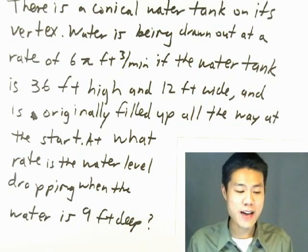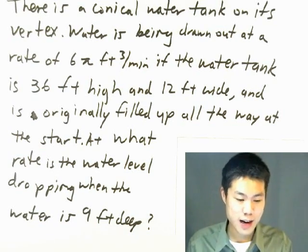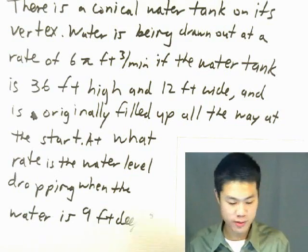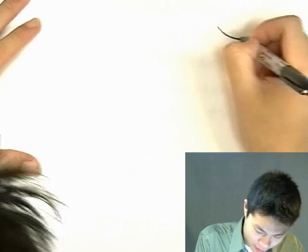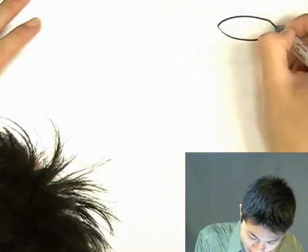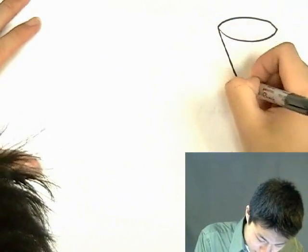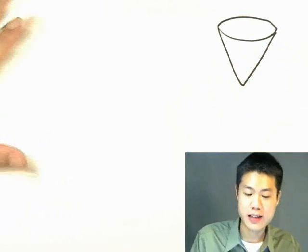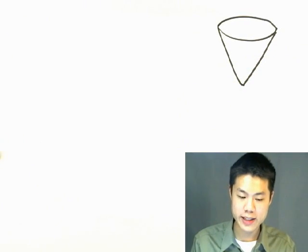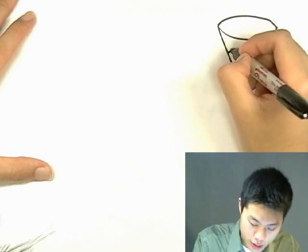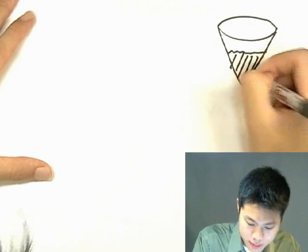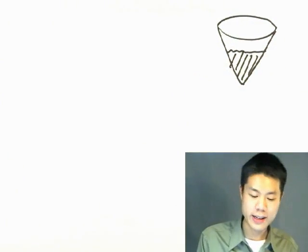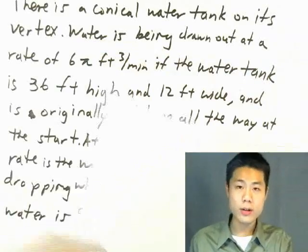But, so what we have here is we have a conical water tank on its vertex. And what is a conical, what is it in the first place? Well, I don't think they actually have these kind of water tanks. But, it's basically a funnel, right?